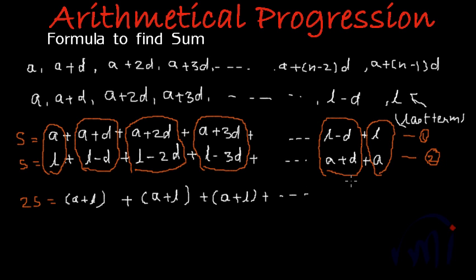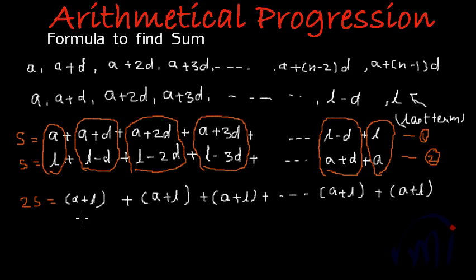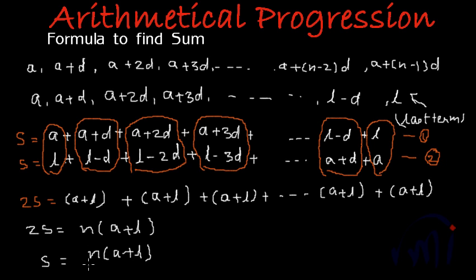For the last terms also, we are getting A plus L and A plus L. So how many total (A plus L) do we have? Originally we had N terms in the series, so by flipping we also get N terms, and we are adding two terms at a time. So we get a total of N times (A plus L). Therefore, 2S equals N multiplied by (A plus L), or S equals N multiplied by (A plus L) divided by 2.